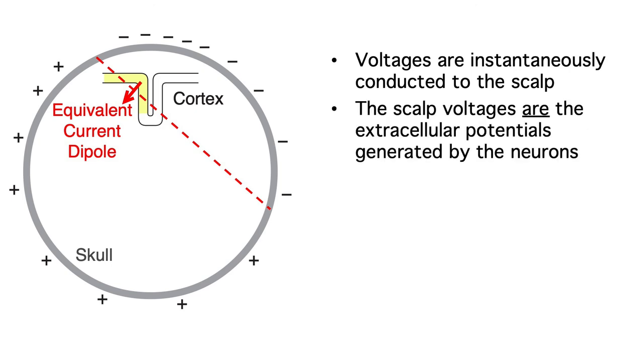Second, the voltages we record from the scalp are the actual extracellular voltages produced by the neurons during neurotransmission. When you record someone's EEG, you're picking up the actual voltages created by the neurons in that person's brain.